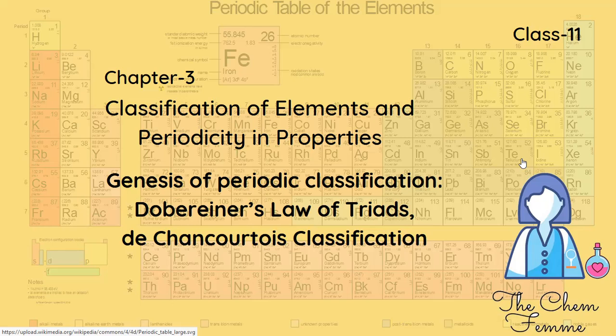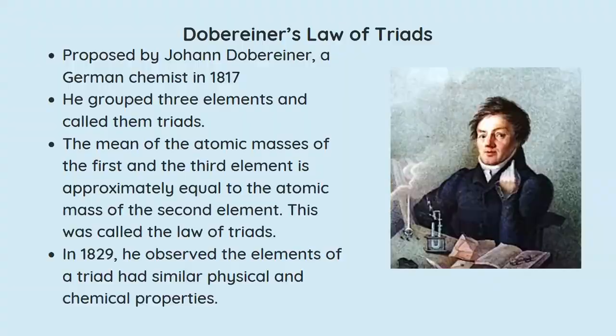Genesis of Periodic Classification. The word genesis means the form or order in which something was formed. The modern periodic table that we know now was not always this way - this was not what they started with. Instead, there were various types of periodic tables proposed by various scientists, and in this video we are going to be talking about two of those periodic tables.